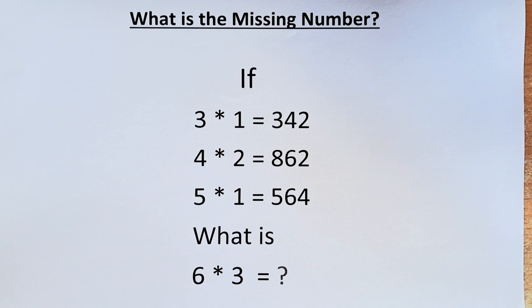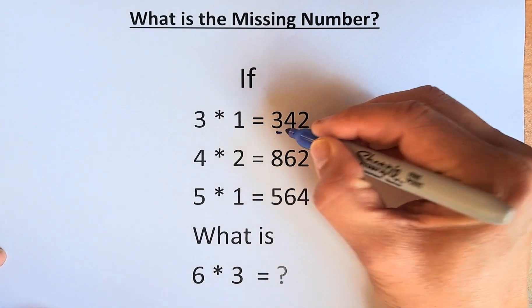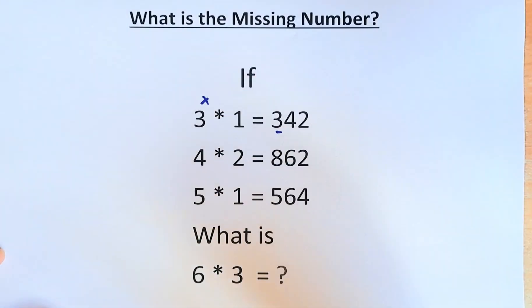let's try to solve this problem. If you can see, 3 star 1 equals 342 is quite difficult unless you think outside the box. So to get the first number 3, we are going to multiply the numbers. 3 multiplied by 1 will give us 3.